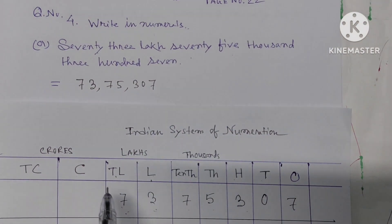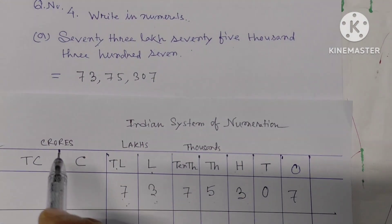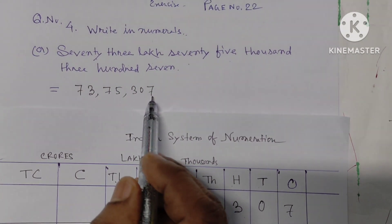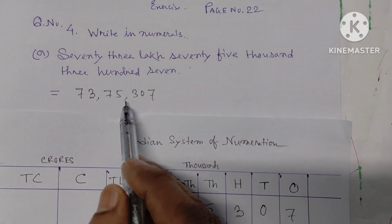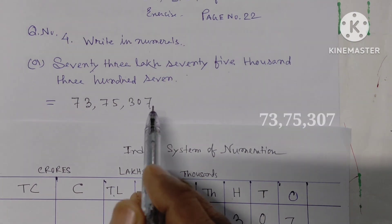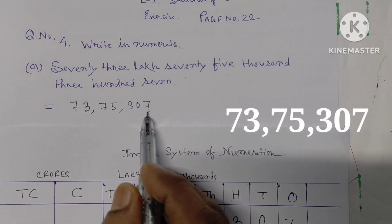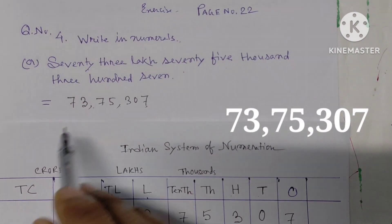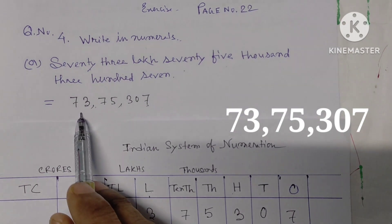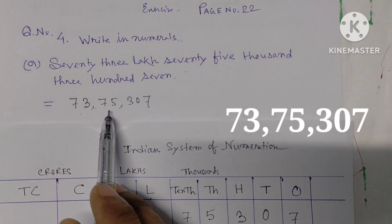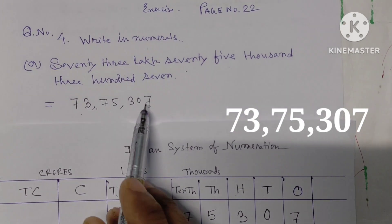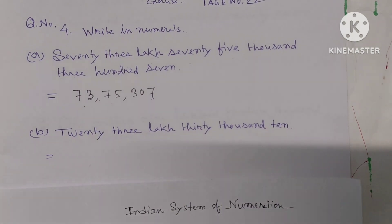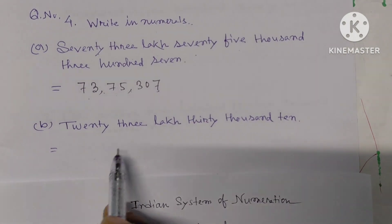We know that in the Indian system of numeration, the first comma comes from right to left after three digits, then after every two digits. So the answer is 73,75,307.